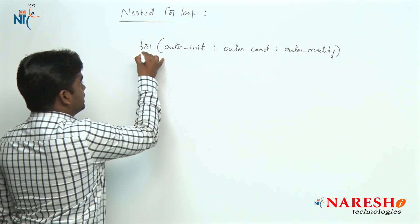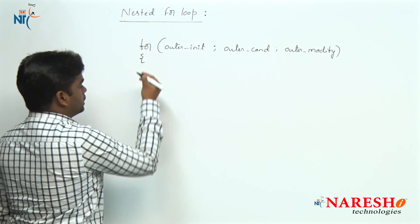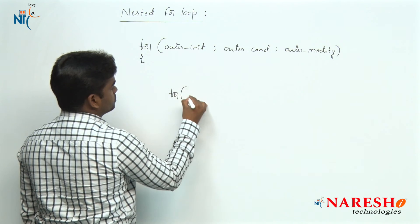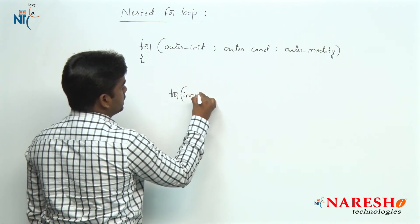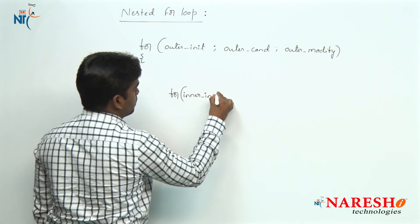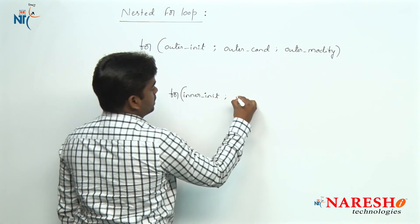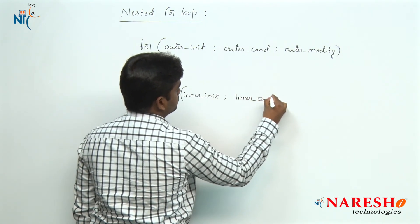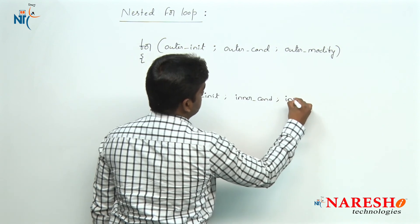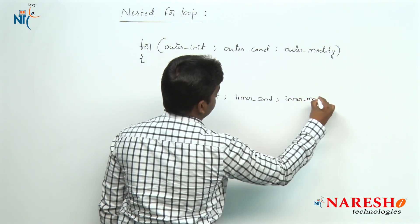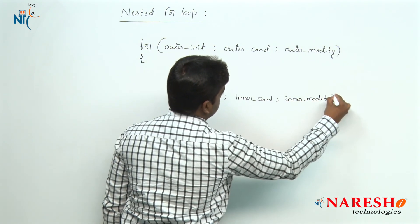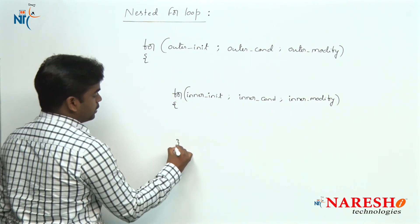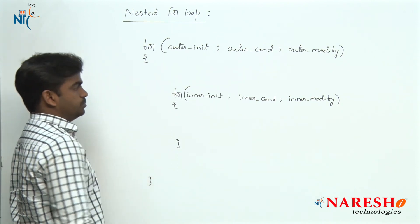This is the outer loop. And inside the outer loop, our concept is writing the inner loop. So this is inner loop initialization, then inner loop condition, and then inner loop modify statement — defining a for loop inside another for loop.